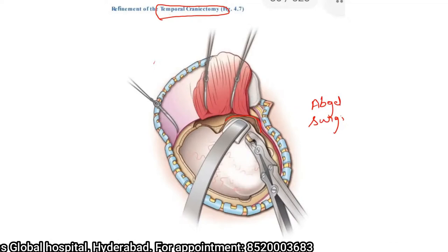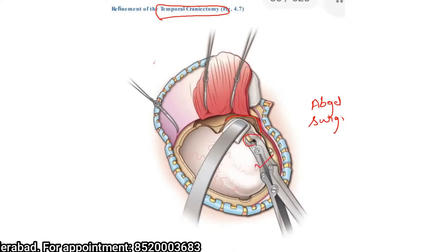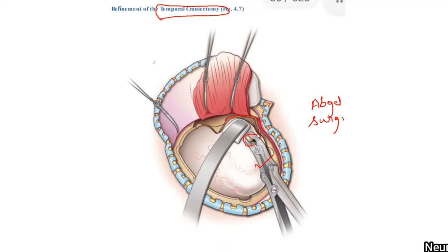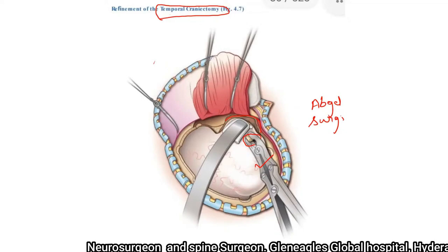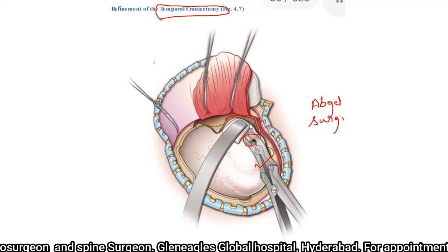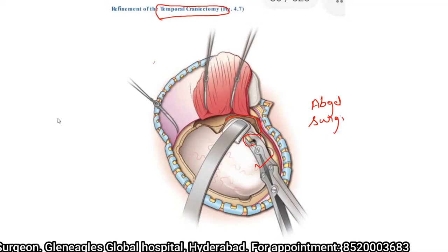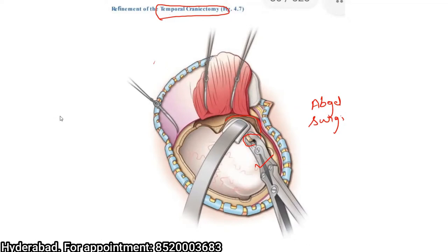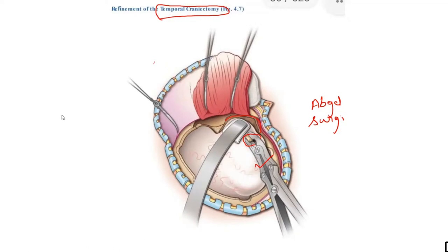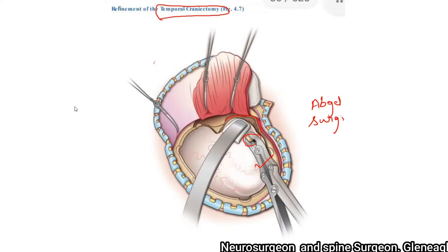Once this is done, you can use a Nibbler to rongeur the bone to reach the base of the middle cranial fossa. If any air cells are opened, close them with Avitene and bone wax. The squamous portion of the temporal bone must be removed until flush with the floor of the middle cranial fossa. If the mastoid air cells are exposed, bone wax should be applied completely so that there is no CSF leak later on.